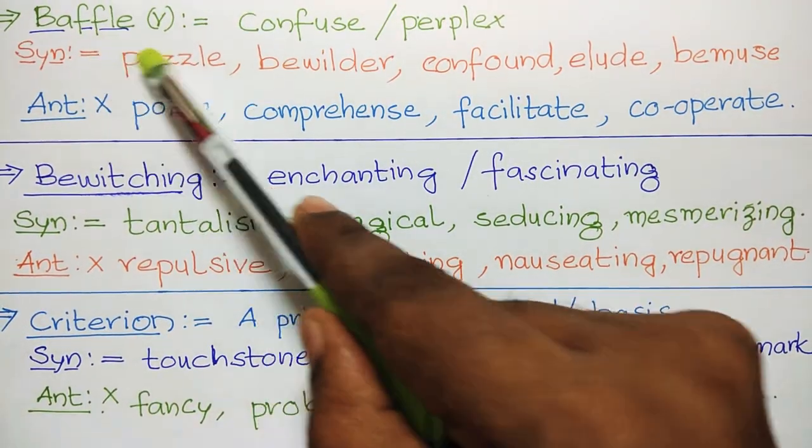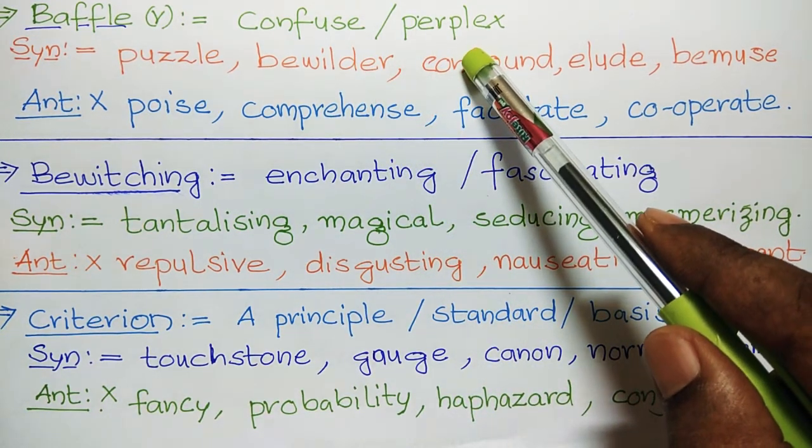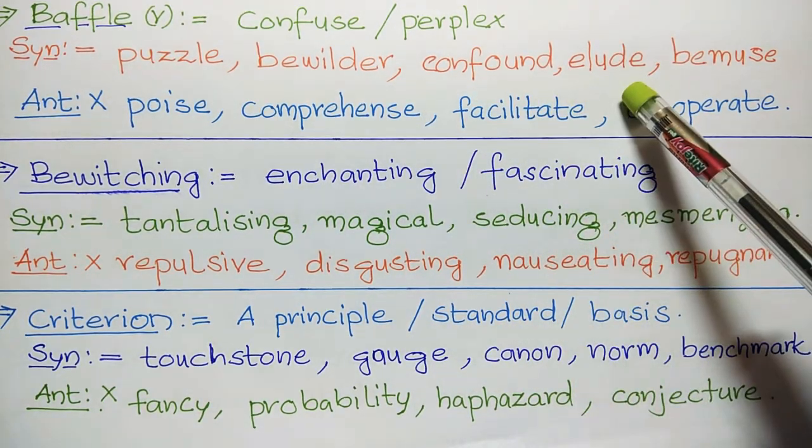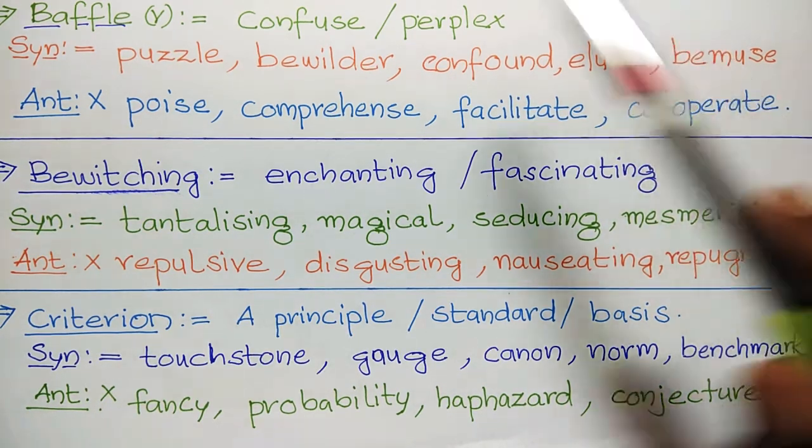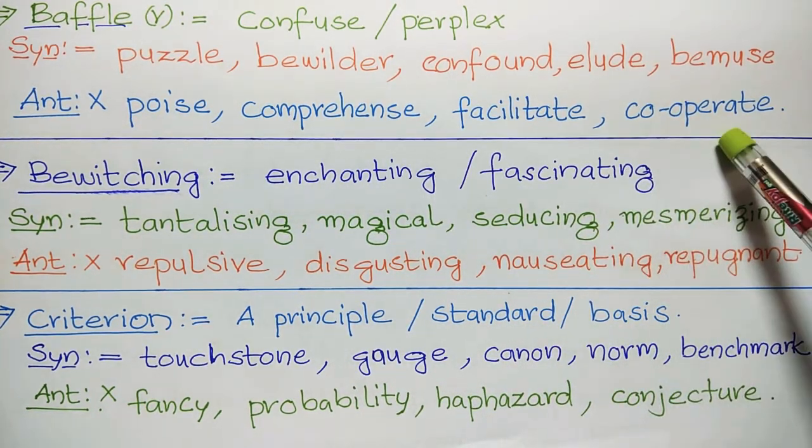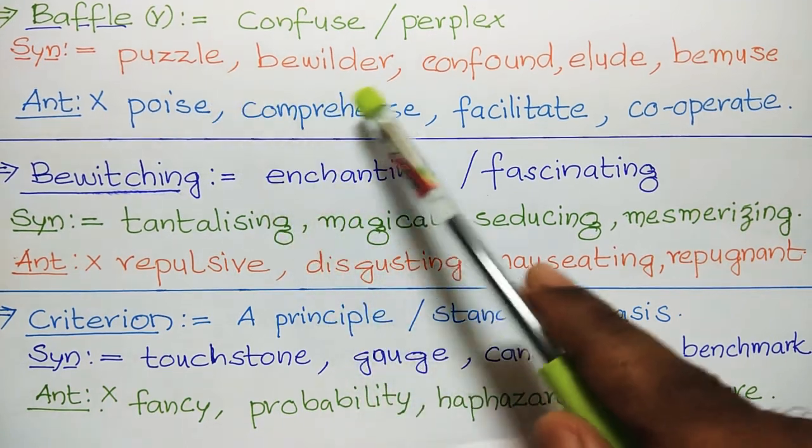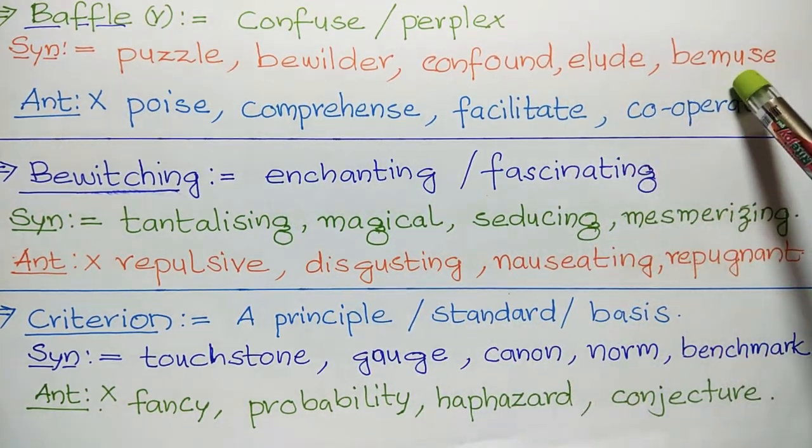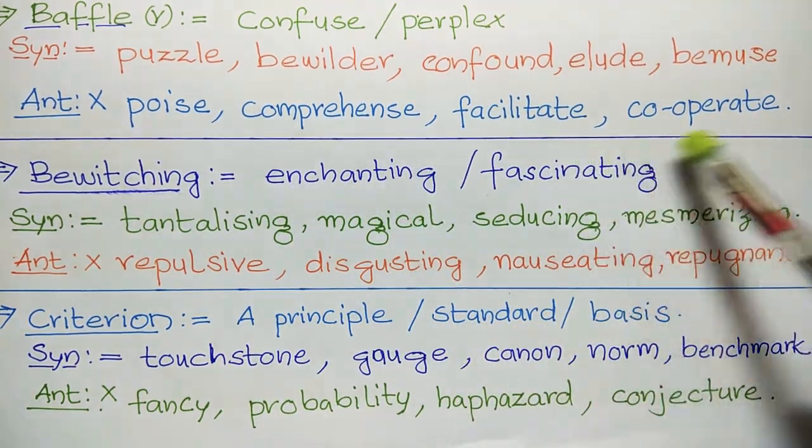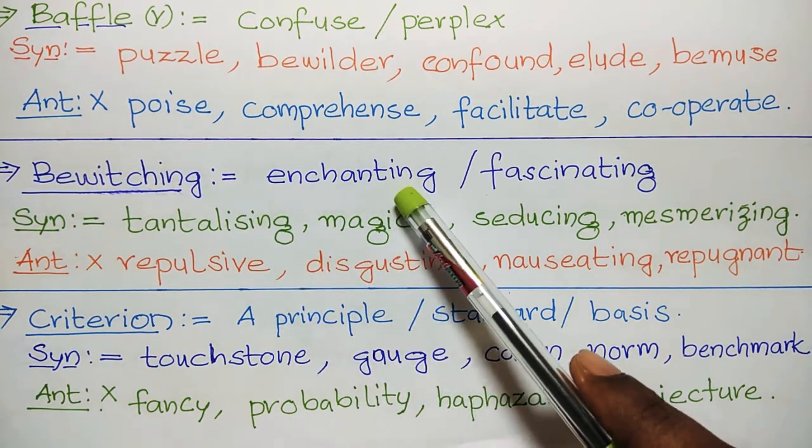Next, baffle. Baffle means confuse or perplex. Synonyms are puzzle, bewilder, confound, elude, bemuse. Antonyms: poise, comprehend, facilitate, cooperate.